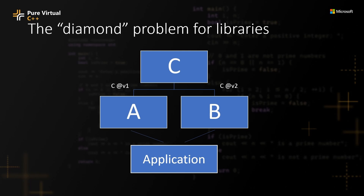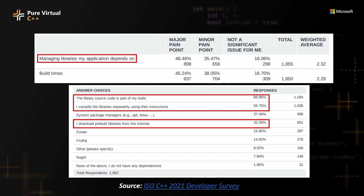And of course, library C might have dependencies of its own. You would end up having to research every single library you care about — and every library those depend on — all the way up to the top, and come up with a plan for getting source code and binaries for all of these dependencies, and then hopefully everything will just build with your project. Recent surveys conducted by the Standard C++ Foundation found that C++ developers list managing libraries as one of their top pain points, right up there with build times. This is a pattern that hasn't changed much over the years.